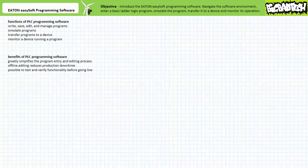Eaton offers a demonstration version of this software for free on their website. The demo version does not allow a technician to communicate or download a program to an actual device. However, it does allow an individual to build and simulate a program. If you've already got a copy of EZSoft available or are capable of downloading the demo version, fire it up and follow along. The EZSoft programming software is proprietary software used to program devices in the Eaton EZ Intelligent Relay or multifunction display family only. Other manufacturers or other devices not in these families necessitate the use of different software. While proprietary in nature and limited to a handful of devices, most of the programming software features presented in this lecture are universal in nature, and only subtle differences exist between different programming environments.